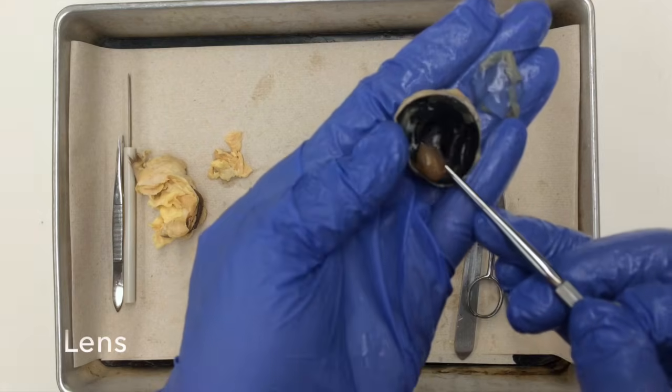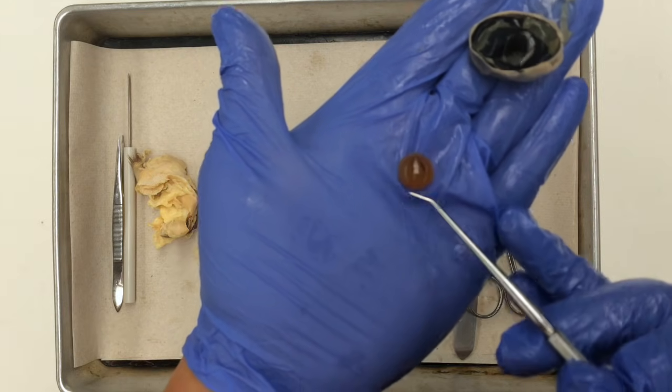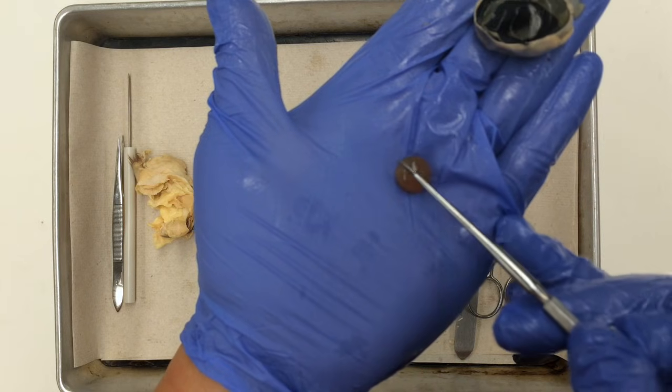I'm going to go ahead and remove the lens. Here's the lens. Under normal conditions, the lens should be translucent, but since it's been sitting in solution, it is slightly opaque, and it is now rubbery and hard.